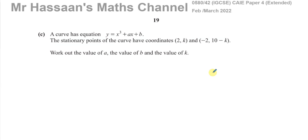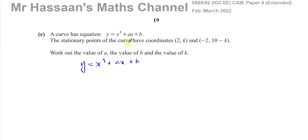Welcome back. I'm now answering question 12 part C from the February-March 2022 paper from the Cambridge paper 4 Extended 0580 Syllabus. We are told about a curve with equation y equals x cubed plus ax plus b, and the stationary points of the curve have coordinates (2, k) and (-2, 10 minus k). We need to work out the value of a, b, and k.